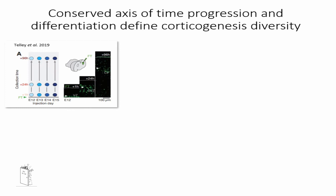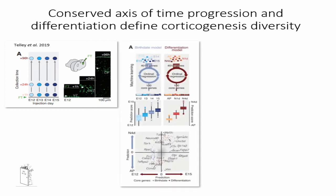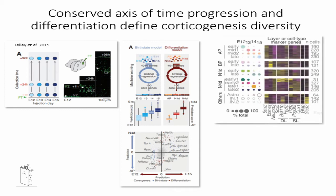To answer this question, we used the dataset published by Telley in 2019, where cortical cells born at E12, E13, E14, and E15 were collected after 1 hour, 24 hours, and 96 hours after birth using the FLASHTAC technique. This dataset allowed the authors to describe common axes of temporal progression and differentiation, as well as the different clusters of cells that formed during corticogenesis. We used it to identify the main moment during cortical differentiation when early born cortical cells develop the heterogeneity observed in our previous experiments.